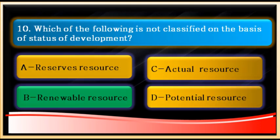Question number ten: which of the following is not classified on the basis of development? On the basis of development, resources can be actual, potential, and reserve. Renewable and non-renewable resources are classified on the basis of renewability, not development. So option B is correct — renewable resource is not a classification based on development.